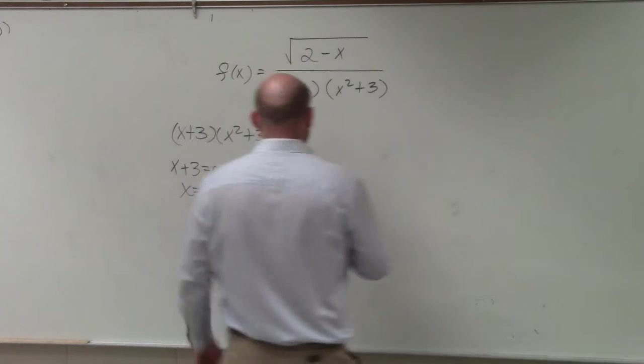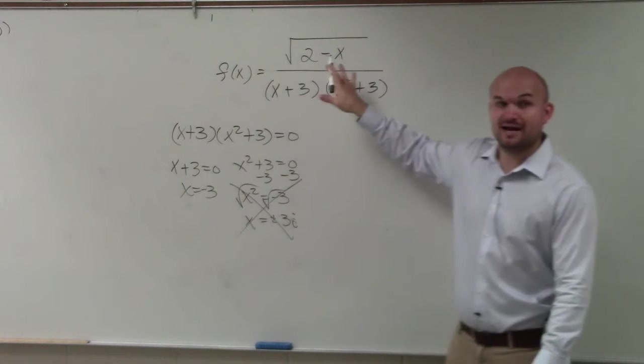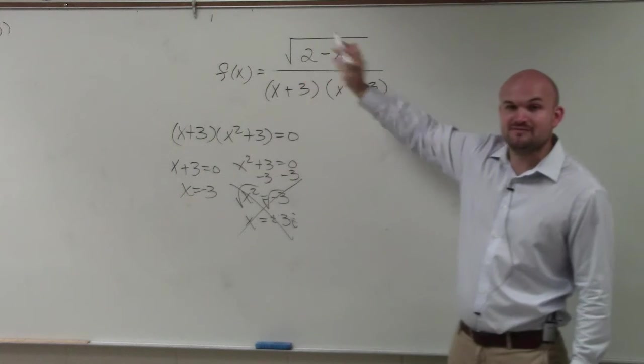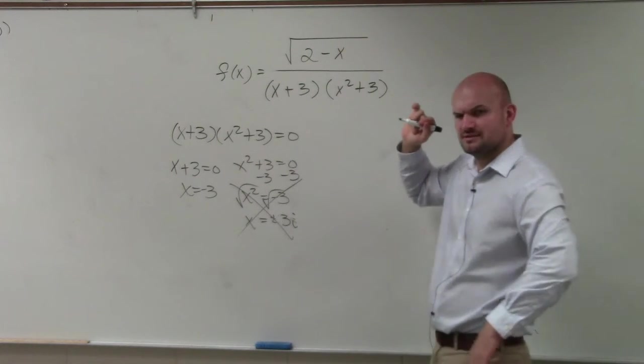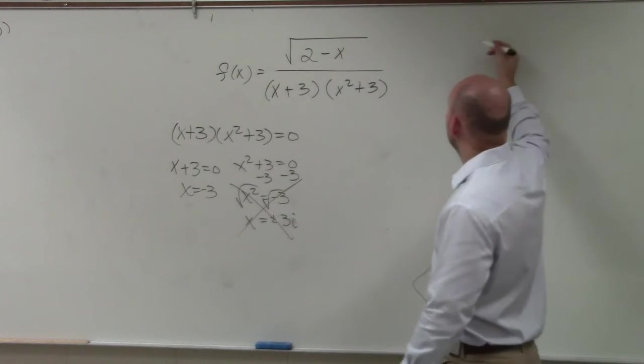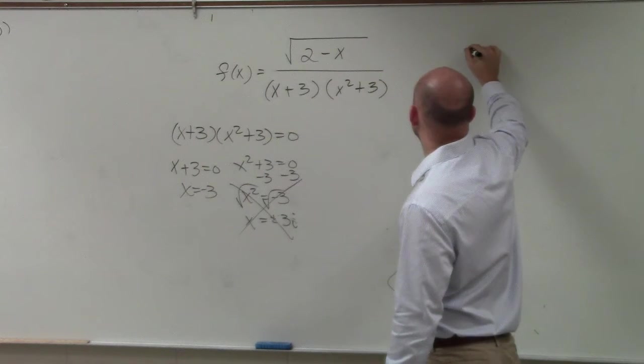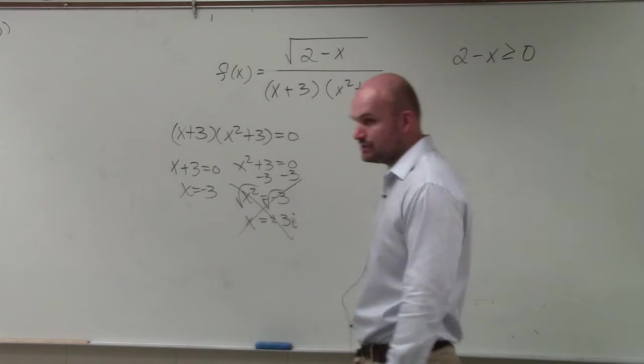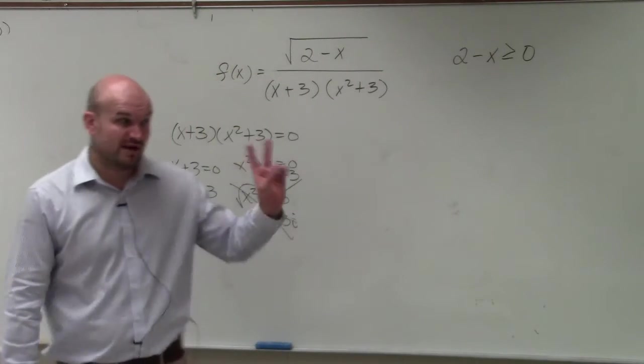So our second constraint, anything that's under a radical, doesn't matter if the radical is in the numerator or in the denominator, any time you have something under radical, you're going to set it, 2 minus x has to be greater than or equal to 0. So we have our two constraints.